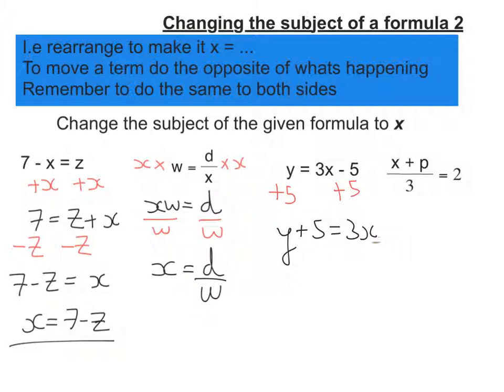And now I divide by the 3. And flipping this around, I'm going to get x is equal to y plus 5 over 3.